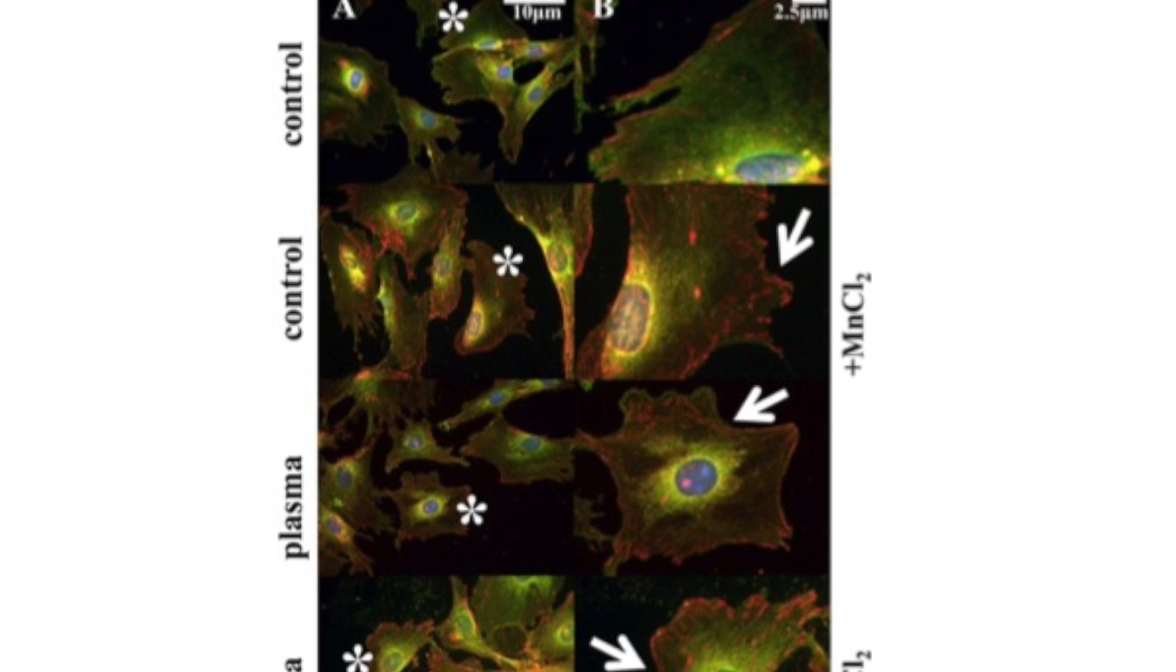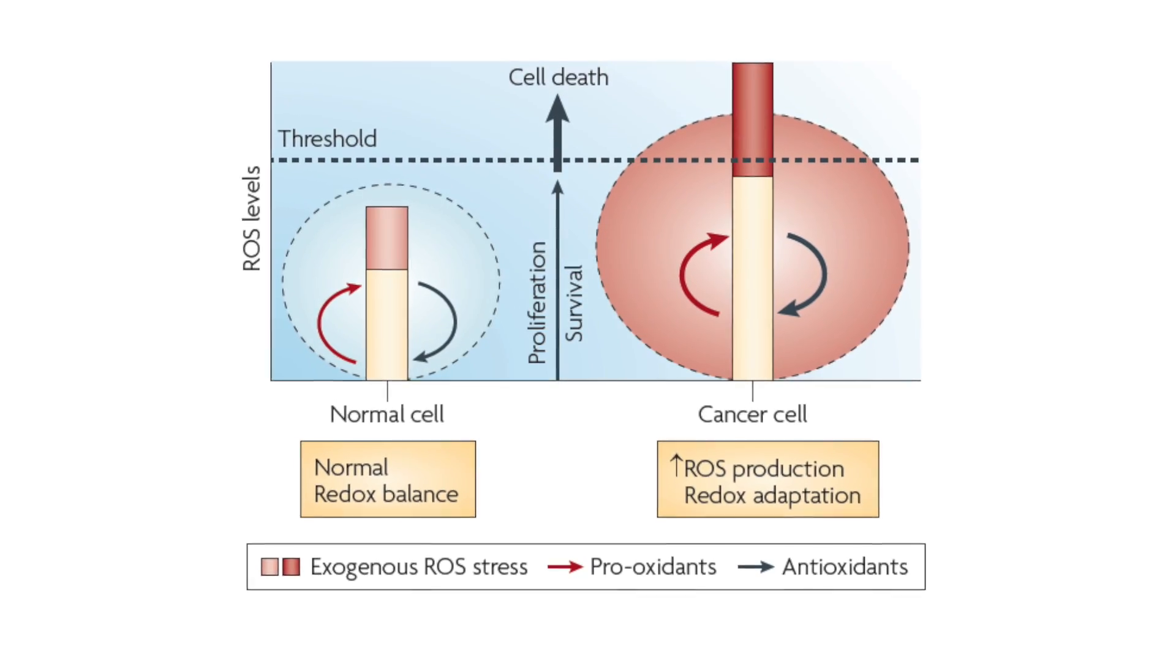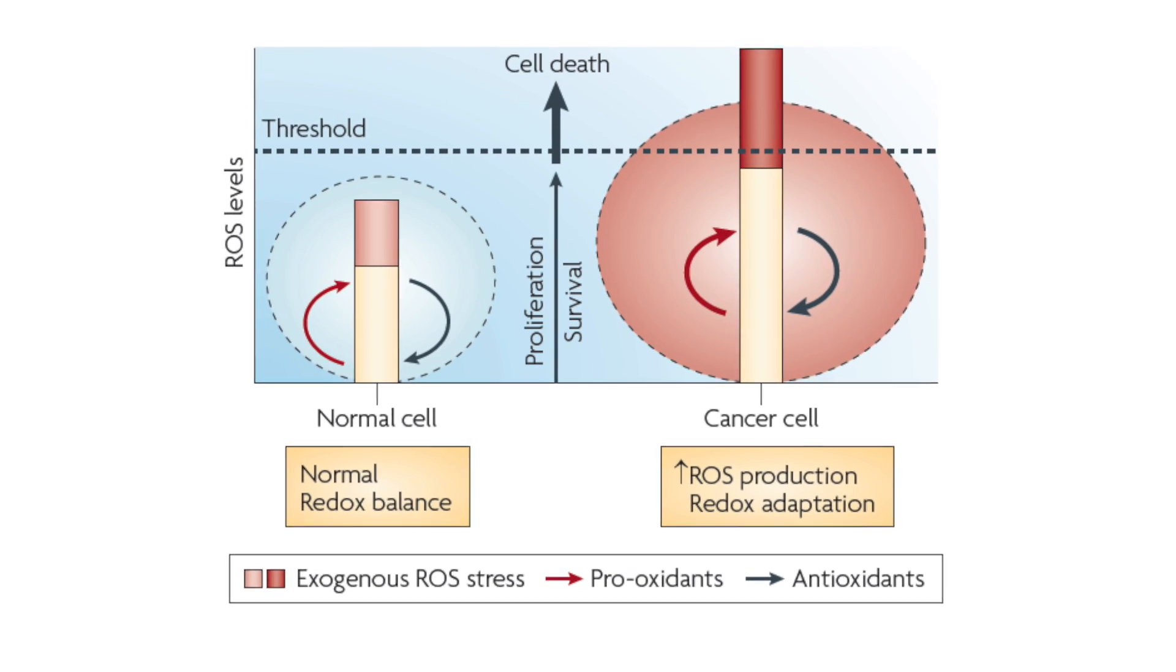There is usually a higher level of reactive oxygen in cancer cells as opposed to normal cells. By adding the same amount of extra reactive oxygen to a cancer cell we can go over the threshold while we are still under threshold in the case of a normal cell, and this can be one of the possible mechanisms of selectivity.